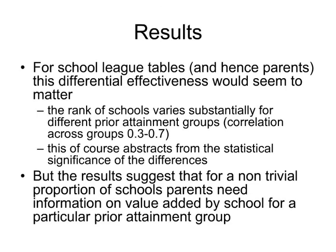Schools could be differentially effective in a random way, but what we found is that if a parent uses an average measure, they may get a poor indication of the effectiveness of that school for their child. They would be better off ranking schools in terms of their child's prior attainment group. The rank of schools chosen using the average measure looks very different from the rank based on the group-specific measure. We can get more information from the administrative data — either as a parent or as a regulator — by measuring school performance in a slightly more sophisticated way and taking account of prior achievement.